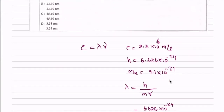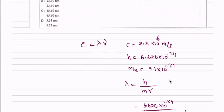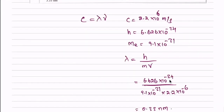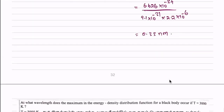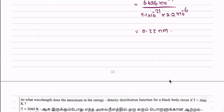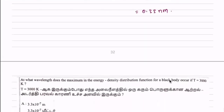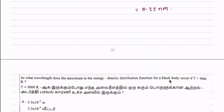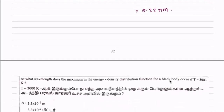Substituting the h value, mass, and velocity, we get 0.33 nanometers. The confirmed answer is 0.33 nanometers.